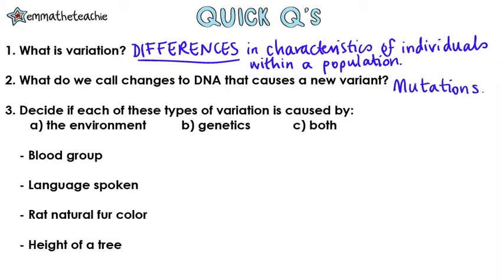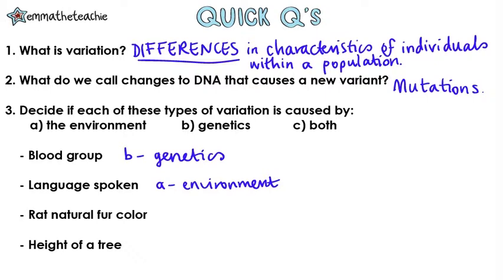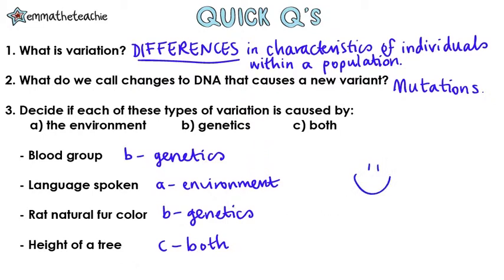Number three: decide if each of these types of variation is caused by A, the environment, B, genetics, or C, both. Blood group — well, you're born with your blood group, so it's determined by your genetics. Language spoken is your environment — so if you live in Spain, you'll probably speak Spanish. Rat natural fur colour — it's the natural fur colour, so it's caused by genetics. And finally, height of a tree — that's caused by both. The plant will naturally have a height it can achieve, but if it doesn't get enough nutrients, light, water, or carbon dioxide, then it won't achieve that.